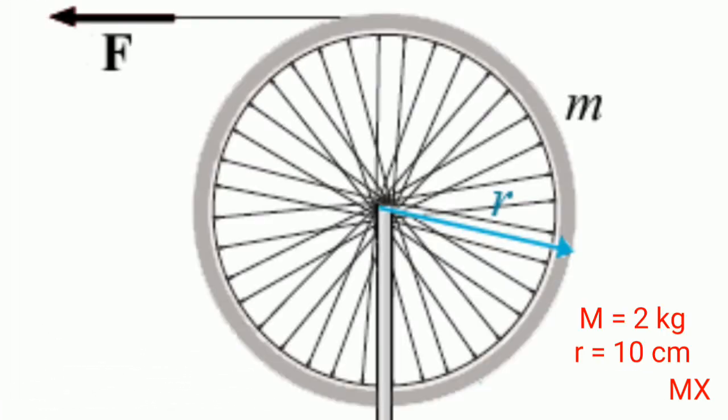So now in this image you can see the bicycle wheel which has a mass of 2 kg and its radius is 10 cm.